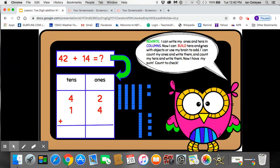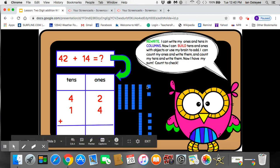Now I can build tens and ones with objects or use my brain to add. I can count my ones and write them and count my tens and write them. Okay. So we've built our tens and ones here. Let's count our ones first. We have to add those first.